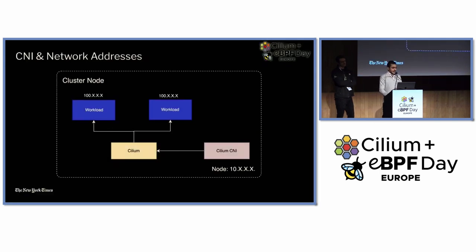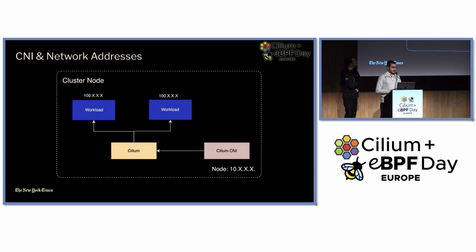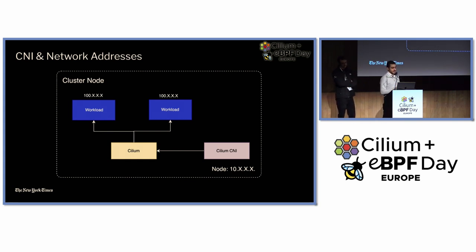Now let's talk about the CNI and network addresses. Because we are using a multi-tenant architecture, we want to ensure that all of our IP addresses are properly managed so we're not running into IP exhaustion at any layer. You can see here that we use the same class for all of our resources across all of our cloud accounts — that's for the nodes. We then transition from the 10 class to the 100 class for our Cilium pods, giving us a good way of not running towards IP exhaustion in our clusters — a translation between the node layer and the pod layer.